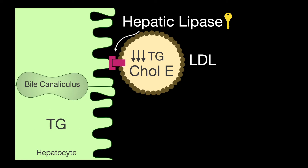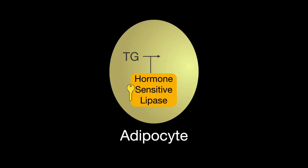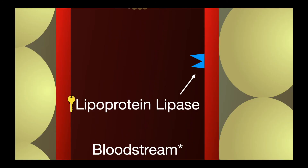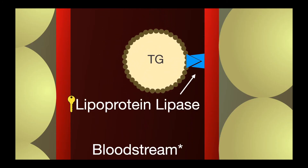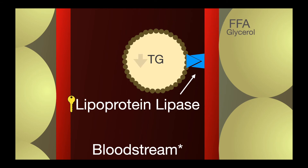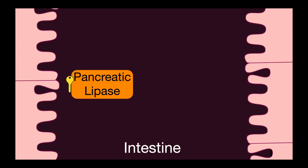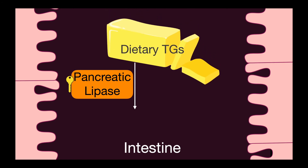Hepatic lipase is involved in degrading the triglycerides remaining in intermediate-density lipoproteins to enter the liver. Hormone-sensitive lipase degrades triglycerides in adipocytes. Lipoprotein lipase degrades triglycerides circulating as chylomicrons. Pancreatic lipase degrades dietary triglycerides in the small intestine to be absorbed into the intestinal cells.